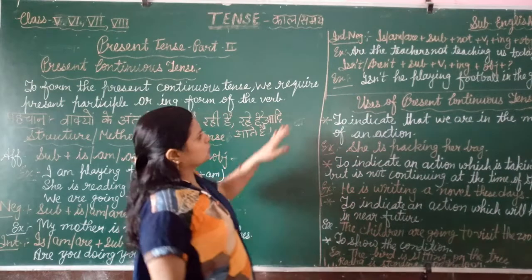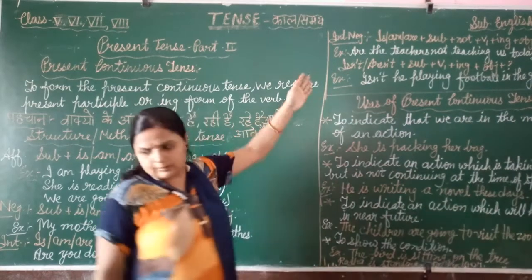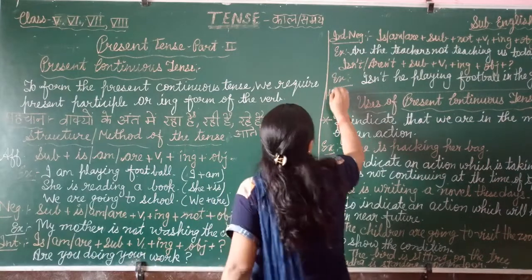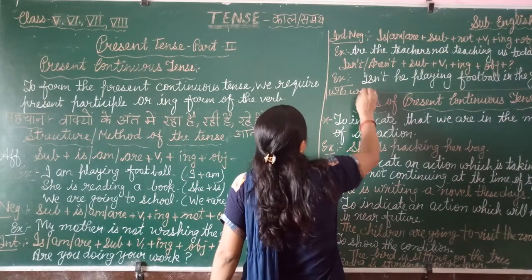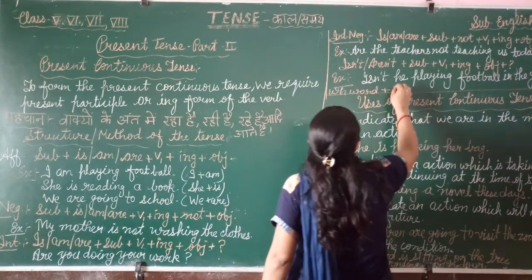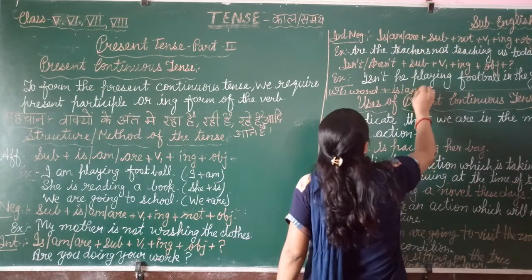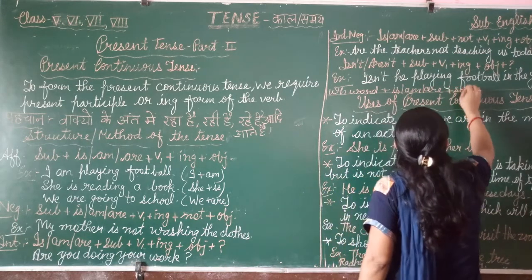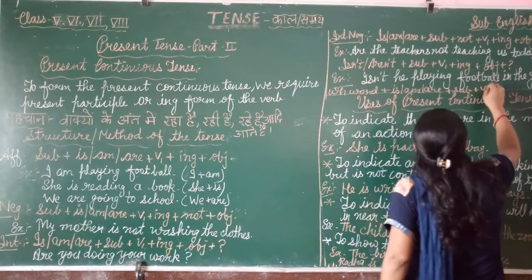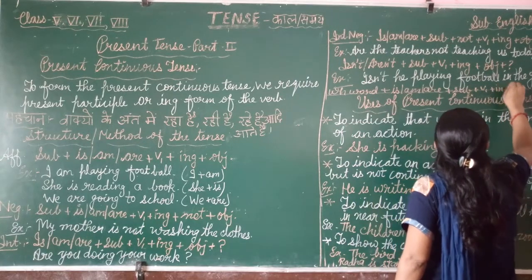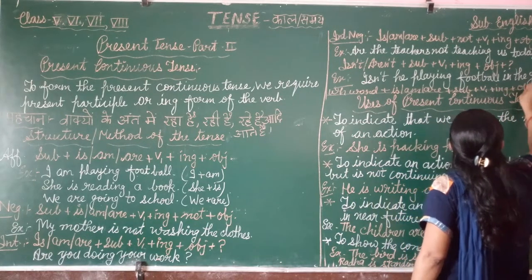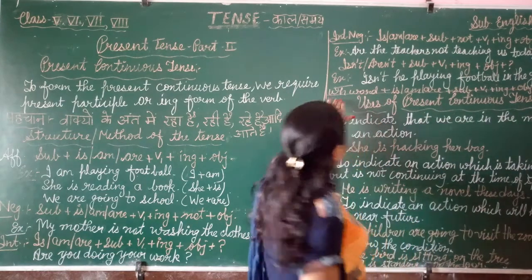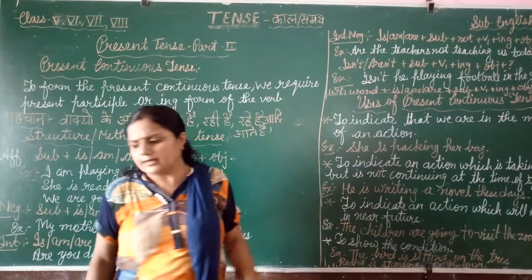Students, if you want to know about the WH-question structure, it is: WH-word plus is/am/are plus subject plus V1 plus ING plus object, then question mark. For example: where are you going today?